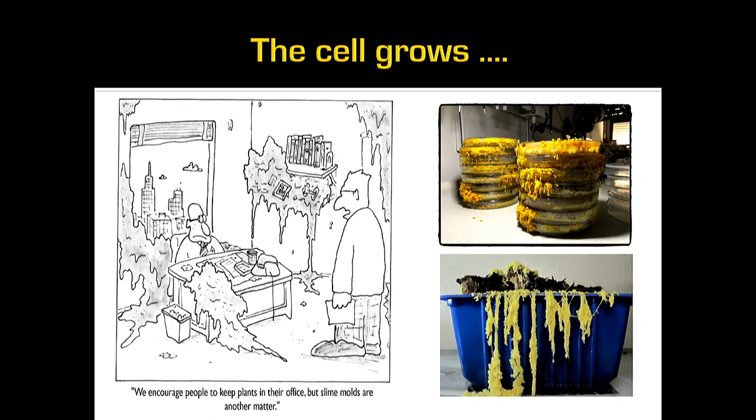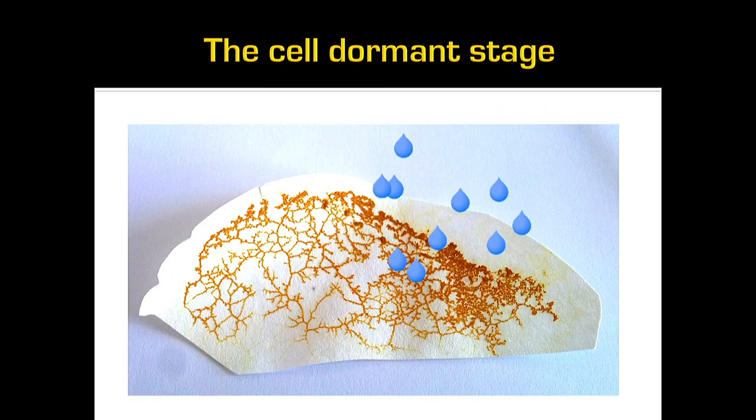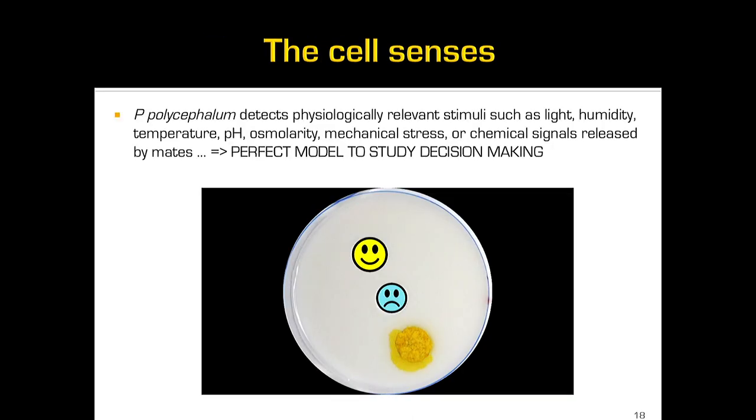It's a nice animal — but it's not an animal. Anyway, there's a good way you can make the slime mold sleep. It's called a dormant stage — a sclerotia. You can keep them like that for more than two years, and you can wake them up just by adding some water. So you can still go on holiday or to conferences.